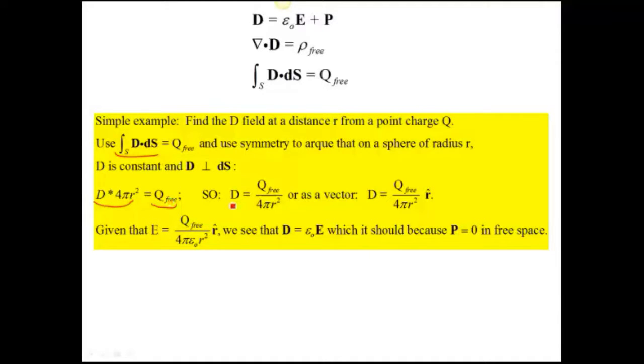Well, we can easily solve for D. If we write that as a vector, then that'll be Q free over 4 pi r squared times the unit vector r. The E field that we know about, this is Coulomb's law. This is equal to Q free divided by 4 pi epsilon naught r squared.